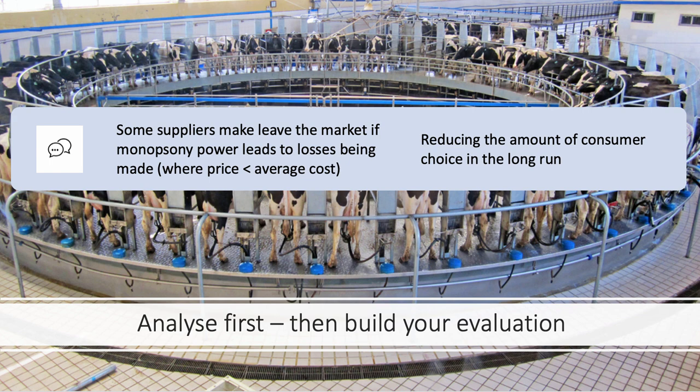If you've got a good chain of reasoning, it'll be easier to evaluate. The first evaluation point: the supplier — the grower, the farmer — may actually have to leave the market if monopsony power causes them to make a loss, subnormal profits, where price is less than average cost. If they leave the industry, that could reduce the amount of choice available to consumers in the long term, which should be detrimental.